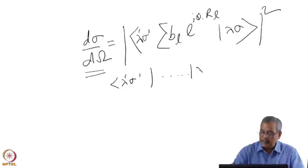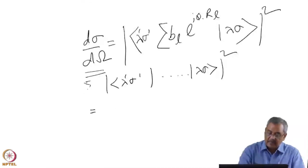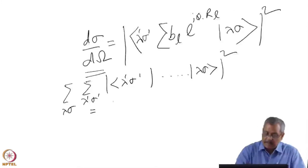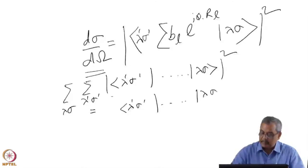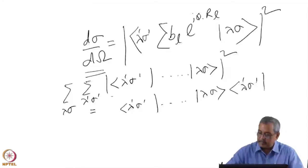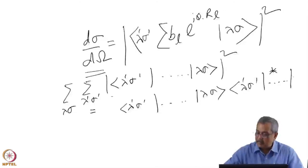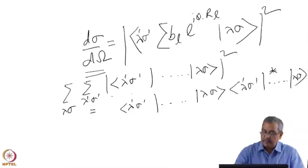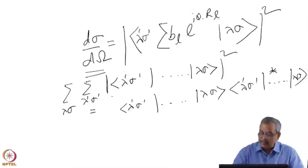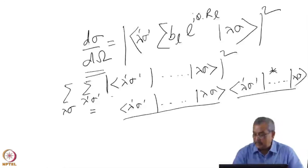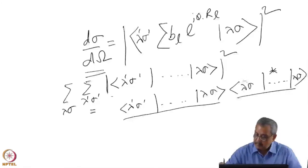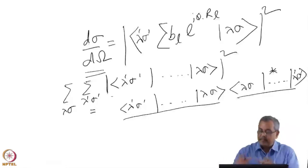I call it — lambda, sigma — and treat this part: the square equals the sum over lambda-prime sigma-prime and sum over lambda sigma. This square I can break up like this: lambda-prime sigma-prime times lambda sigma and lambda sigma, one being the complex conjugate of the other, which gives me the modulus. These are separated wave functions.